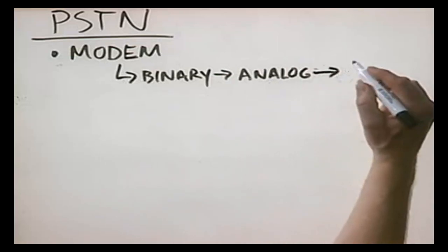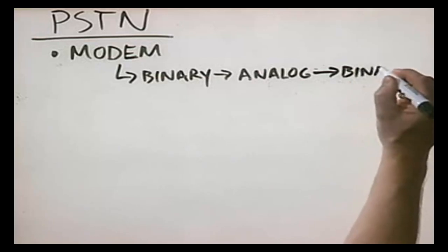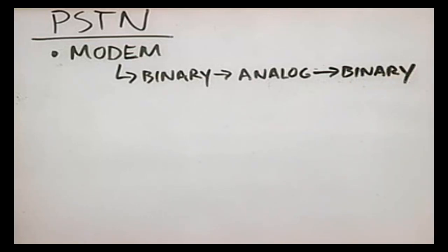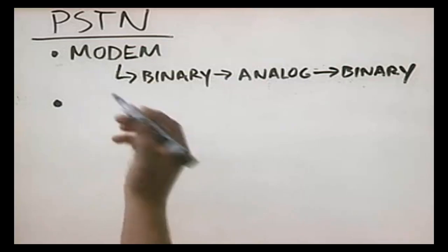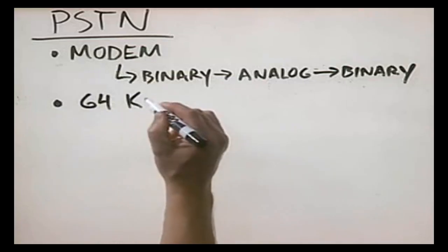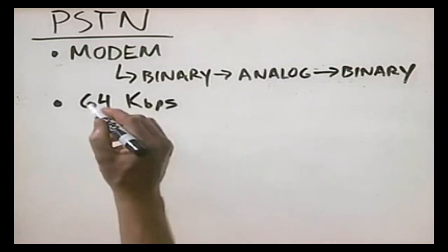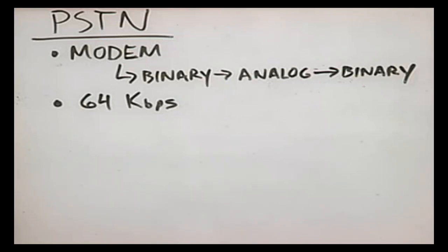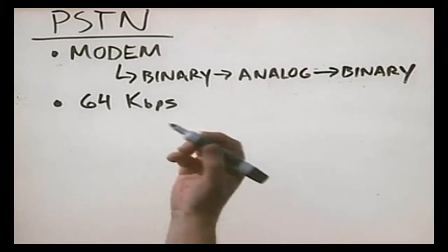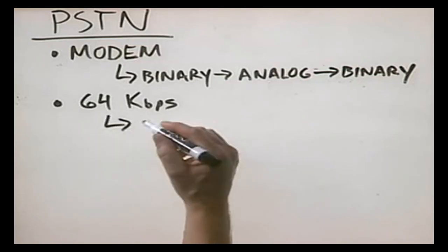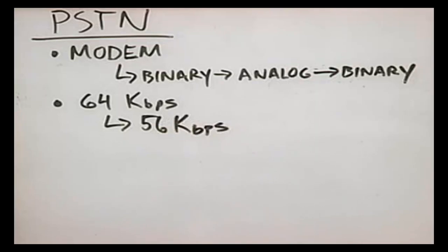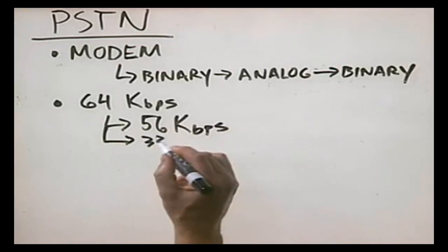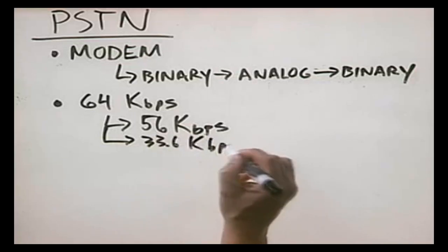On the other end, we have another modem that converts the analog data back into binary PC data. The modem takes your phone line and uses the entire phone line as one 64 kilobit per second data channel. You probably know that if you use the modem, you really can't get 64 kilobits per second. Due to limitations with the phone line, the maximum theoretical you can get is 56 kilobits per second. And in many areas, because of the quality of the phone line, you're really looking more like 33.6 kilobits per second.